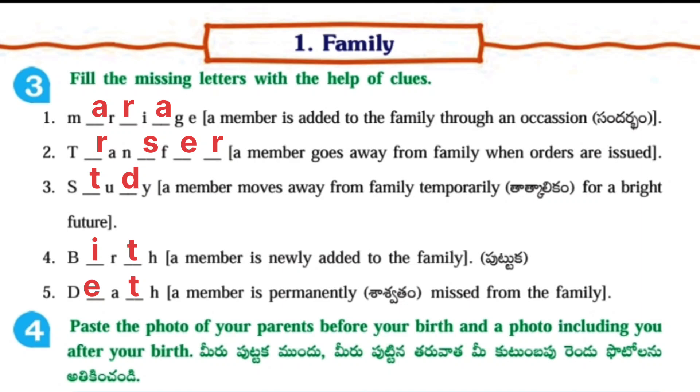Fill in the blanks — Fill in the missing letters with the help of the box. First one: A member is added to the family through an occasion, i.e. marriage.